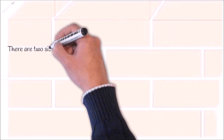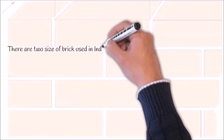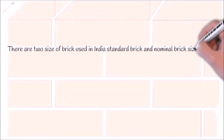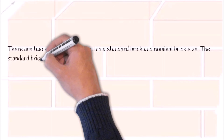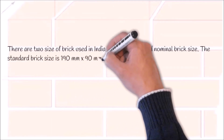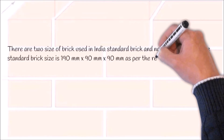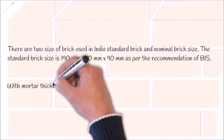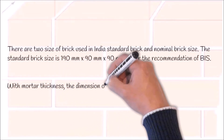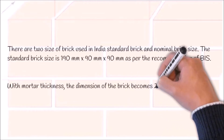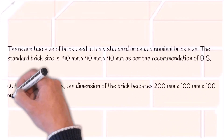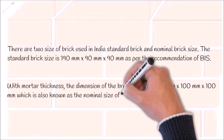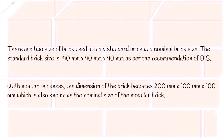There are two sizes of brick used in India: standard brick size and nominal brick size. The standard brick size is 190 mm x 90 mm x 90 mm as per the recommendation of the Bureau of Indian Standards. With mortar thickness, the dimension of the brick becomes 200 mm x 100 mm x 100 mm, which is also known as the nominal size of the modular brick.